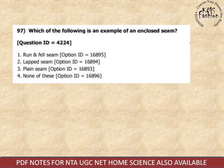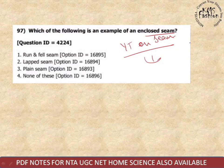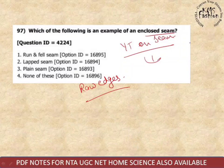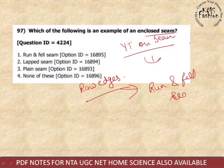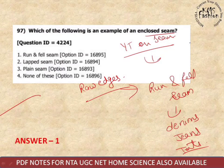Next question: which is an example of an enclosed seam? An enclosed seam means the raw edges are not visible. The run-and-fell seam is an enclosed seam, used in denims, jeans, and tents. So the correct option is first — run-and-fell seam.